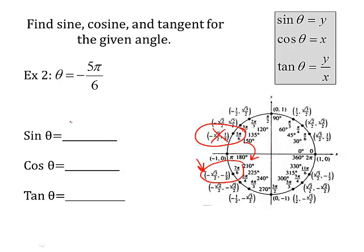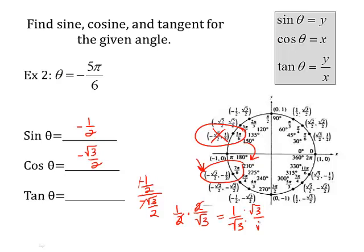So if sine is the y, then sine is negative 1 half. Cosine is negative square root of 3 over 2. Tangent is the y divided by the x. Keep it, change it, flip it. So I get 1 half, change the multiplication, flip the second one. Negative times a negative is going to make this positive. So the negatives cancel each other out. 2's go away. And I have to rationalize. So I'm going to get square root of 3 over 3. Positive square root of 3 over 3.